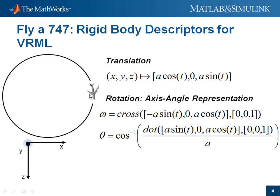If we have to define this rigid body, VRML basically requires you to give two rigid body descriptors. Those familiar with rigid body mechanics will recognize that any rigid body motion can be expressed as a combination of translational and rotational motion. So VRML requires you to give the translational coordinates, which we have already obtained. When it comes to rotation, it requires you to give the rotation as a function of the world reference frame, expressed in an axis-angle representation.